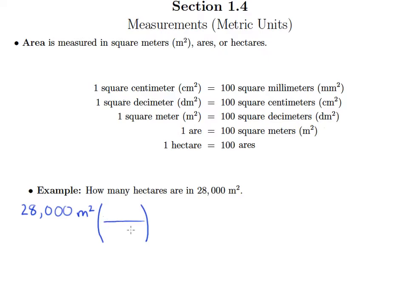Since I'm trying to cancel out my square meters, I'll put that on bottom and put my one are on top. That's 100 square meters in one are. One are is what I want on top. So my square meters are going to cancel.